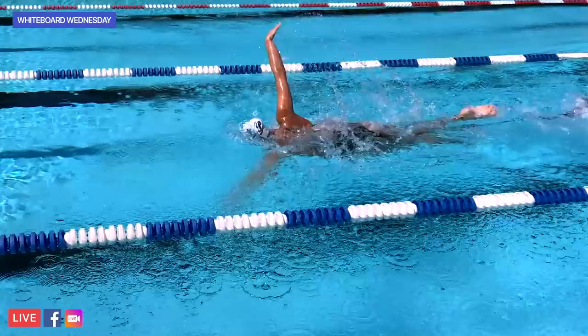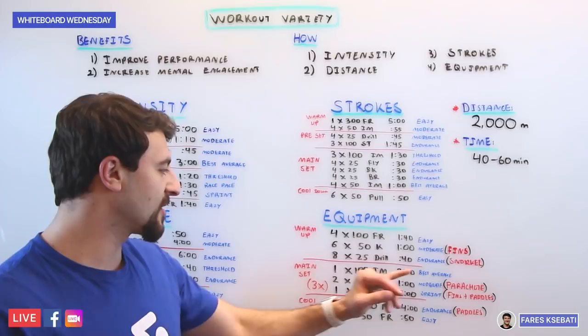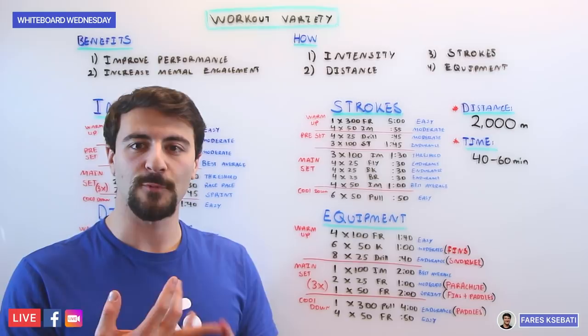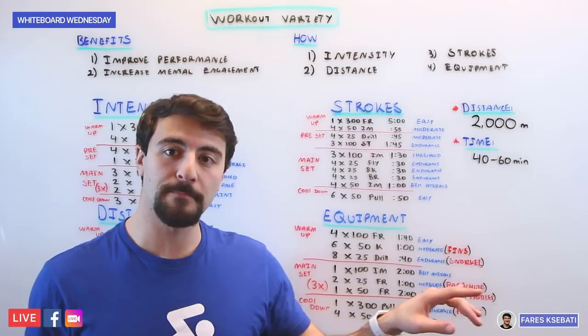So you're really going to maximize your body's potential, going as fast as you can with fins, with paddles, really get a lot of muscle engagement. Then you're going to cool down with 300 pull, flush out the lactic acid, wear paddles. And then 4x50s freestyle easy.